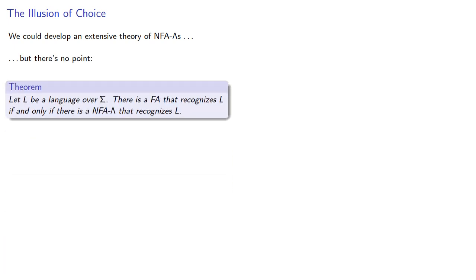We could develop an extensive theory of non-deterministic finite automata with lambda transitions, but there's not really any point. Because if L is a language over some set of symbols, there's a finite automaton that recognizes L if and only if there is an NFA-lambda that recognizes L. In other words, there's no real difference between finite automata and non-deterministic finite automata with lambda transitions.